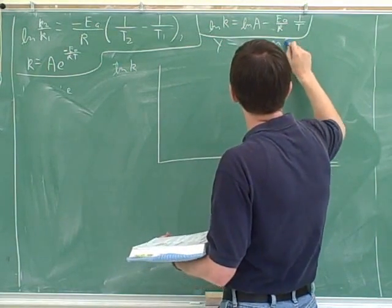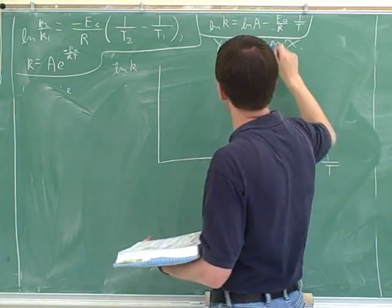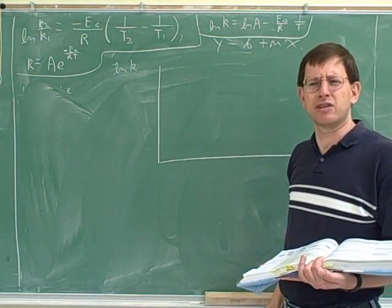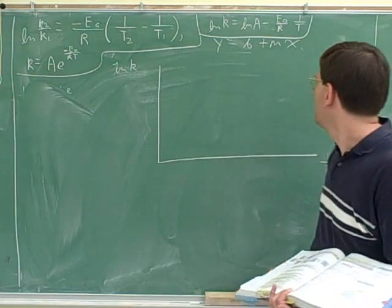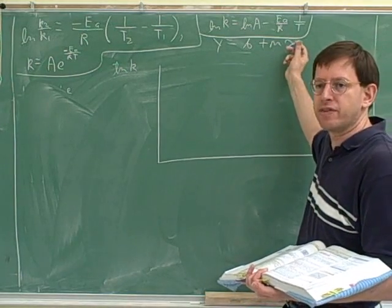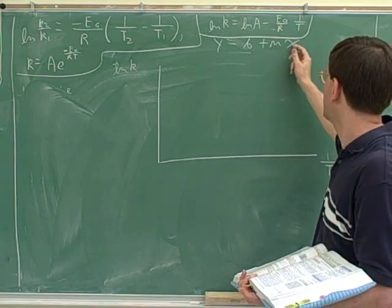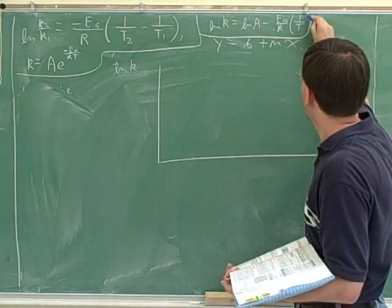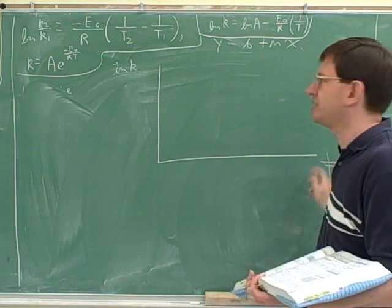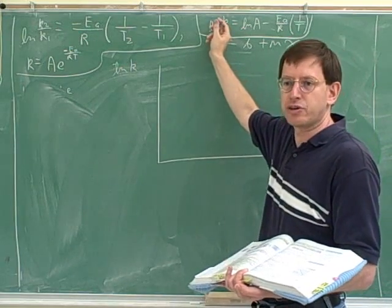y equals mx plus b. y equals mx. Did you guys learn that this way? y equals mx plus b. But x is just the name for the horizontal variable, and y is just the name for the vertical variable. So in this case, our horizontal variable, maybe I should put it in parentheses, is 1 over T. And our vertical variable is natural log of K.